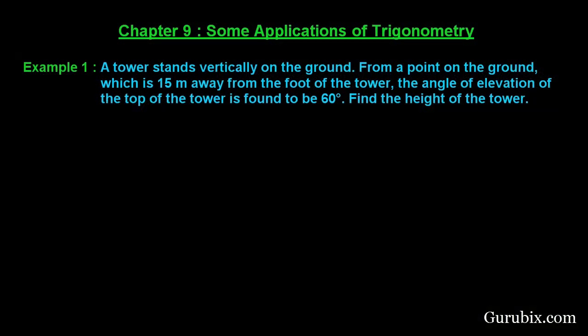Welcome friends. Let us solve example number one of chapter 9. This question is an application of trigonometry. The question is: a tower stands vertically on the ground. From a point on the ground which is 15 meters away from the foot of the tower, the angle of elevation of the top of the tower is found to be 60 degrees. Find the height of the tower.